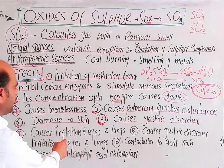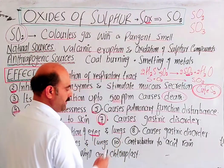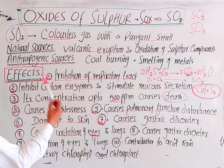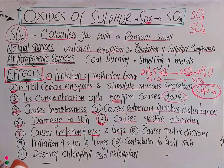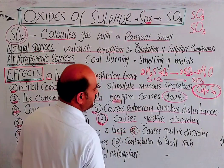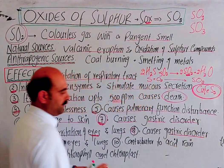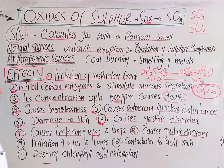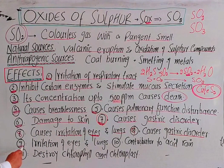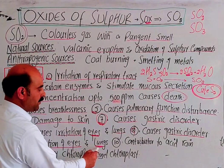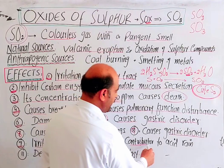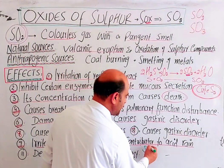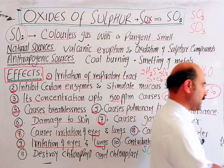It causes irritation of the eyes and lungs. It also causes acid rain. Sulphur dioxide in the atmosphere leads to the formation of acid, which is a significant environmental problem.